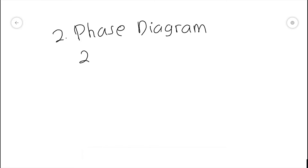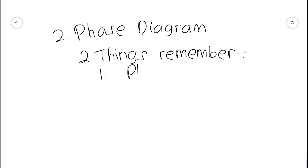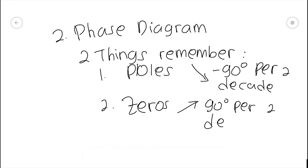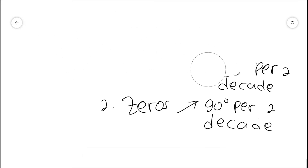There are also two things to remember when drawing the phase diagram of a Bode plot. Poles of a transfer function cause the phase to shift minus 90 degrees every two decades, starting from one decade before the pole to one decade after the pole. Zeros of a transfer function cause the phase to shift positive 90 degrees per two decades, starting from one decade before the zero to one decade after the zero.